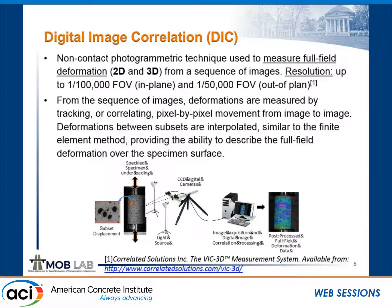My presentation is looking at digital image correlation, or DIC. It's ultimately a non-contact photogrammetric technique, and its primary goal is measuring full-field deformation behavior. It can be done in either 2D or 3D configuration. The 2D typically requires one camera; the 3D requires at least two cameras. If you've been to a 3D movie recently, it's kind of the same principles—you're able to capture out-of-plane movement by stereo pairs of imagery. Resolution has been touted to be on the order of 1/100,000th of the field of view, and for the 3D system, 1/50,000th of the field of view.